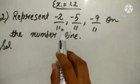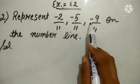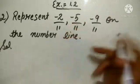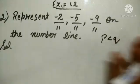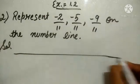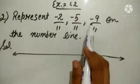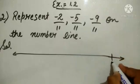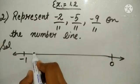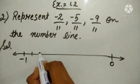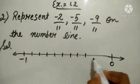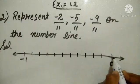The second question is: represent minus 2 over 11, minus 5 over 11, and minus 9 over 11 on the number line. All numbers are in the form where P is less than Q, meaning the numerator is less than the denominator. All numbers are negative, so they lie between 0 and minus 1. Since the denominator is 11, divide the distance into 11 equal parts: 1, 2, 3, 4, 5, 6, 7, 8, 9, 10, 11.